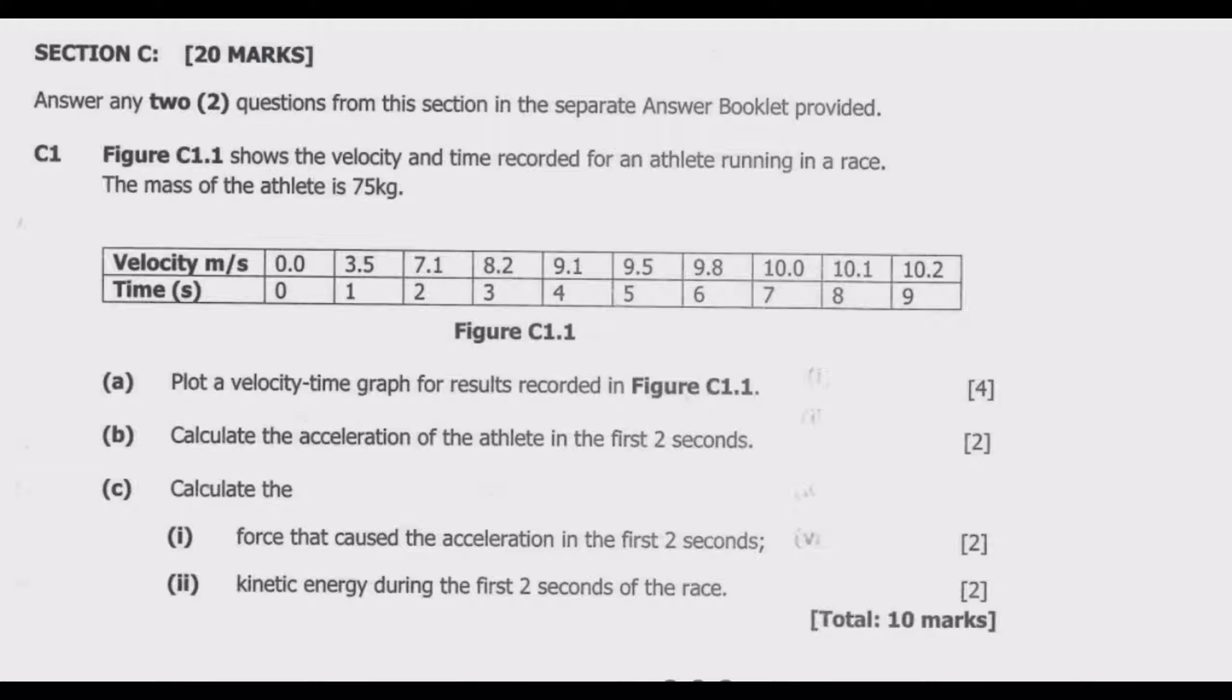Let us look at question C1. Figure C1.1 shows the velocity and time recorded for an athlete running in a race. The mass of the athlete is 75 kg. Question A: plot a velocity time graph for the results recorded in figure C1.1. Question B: calculate the acceleration of the athlete in the first two seconds. Question C: calculate (i) force that caused the acceleration in the first two seconds (ii) kinetic energy during the first two seconds of the race.